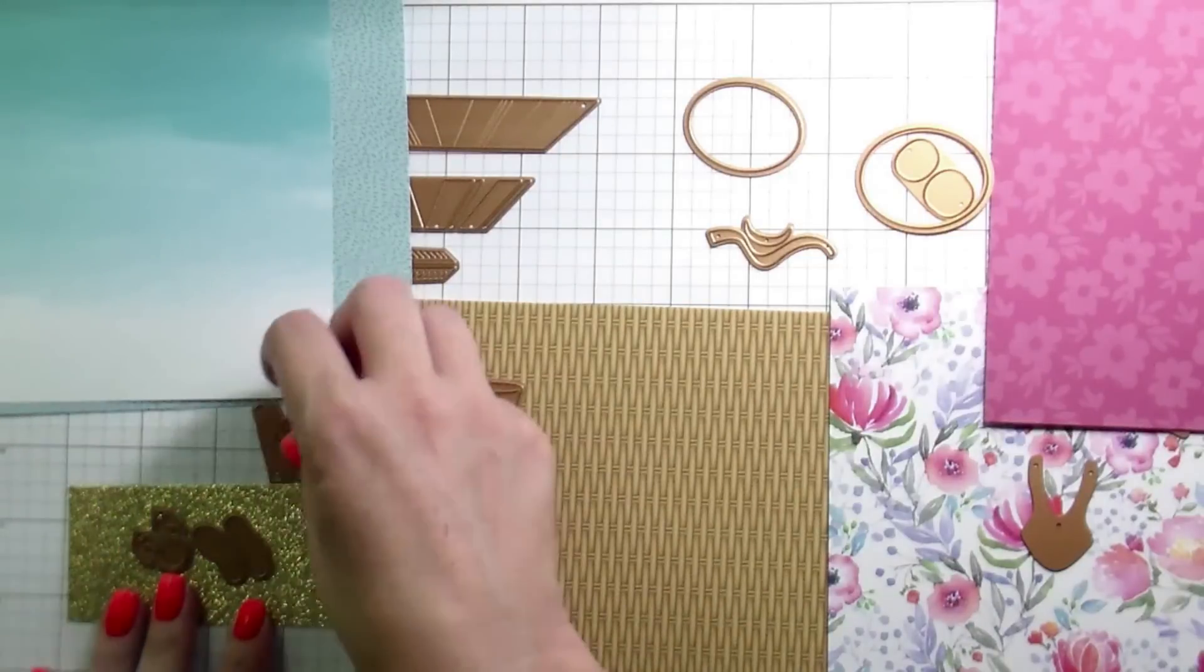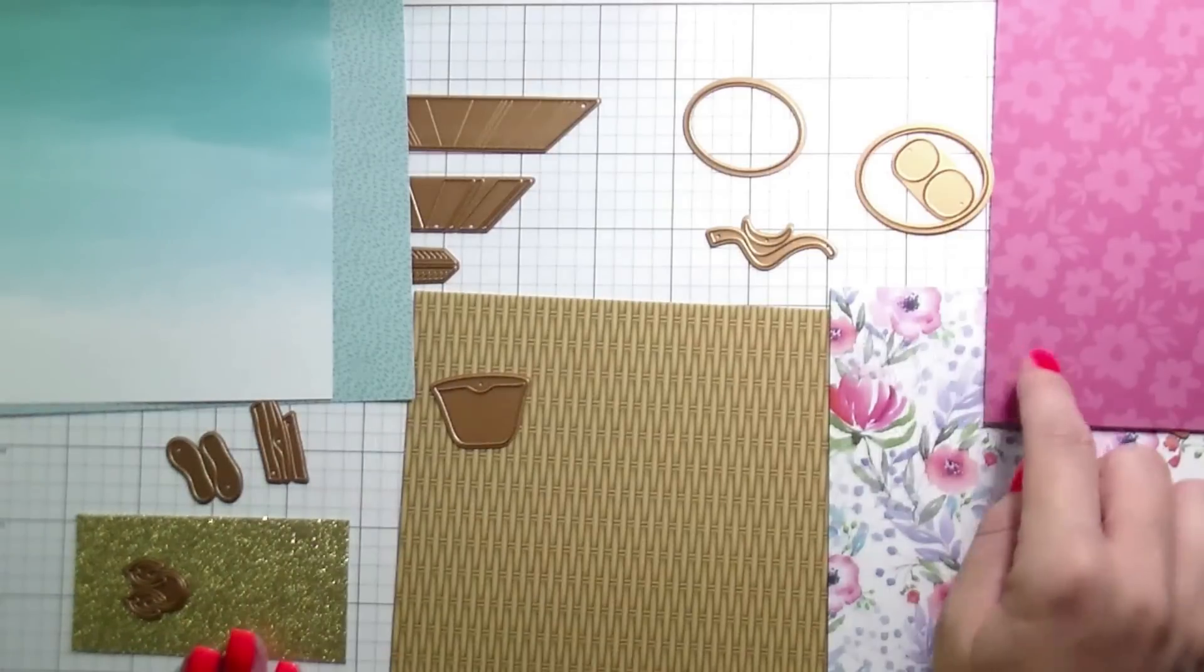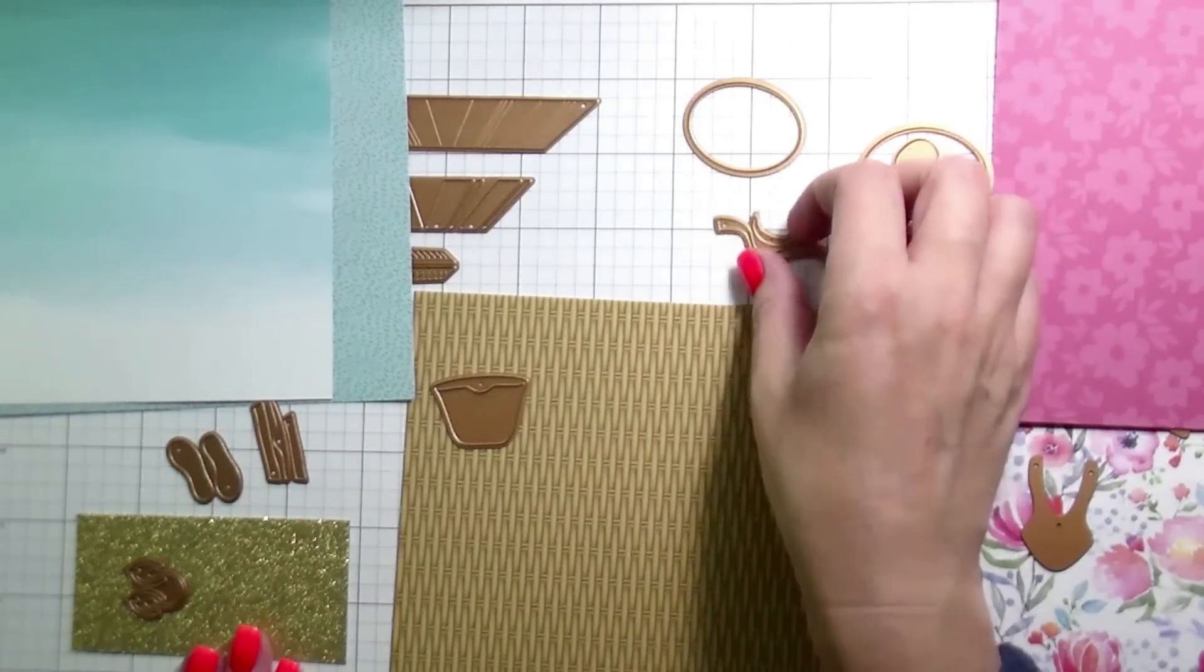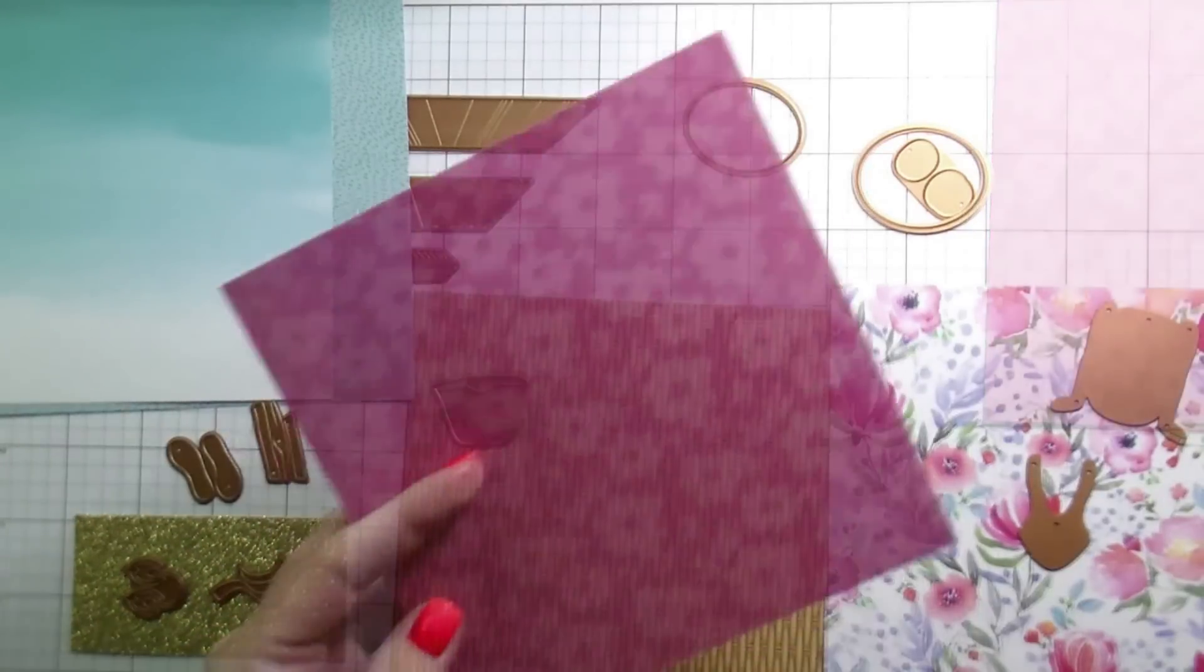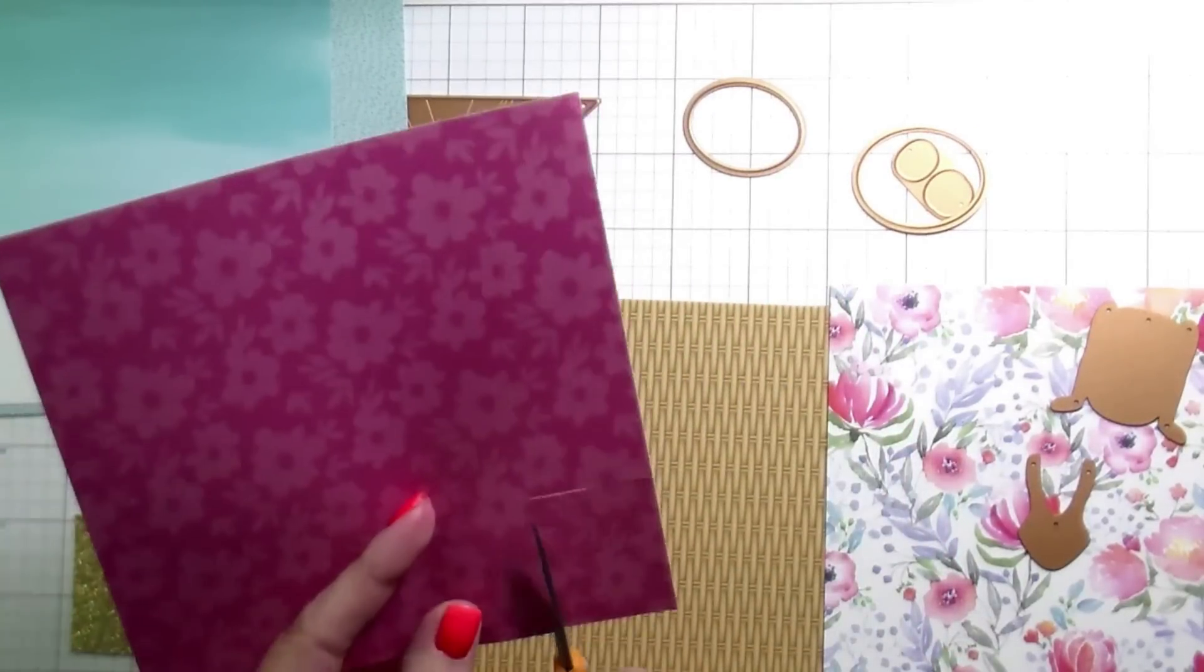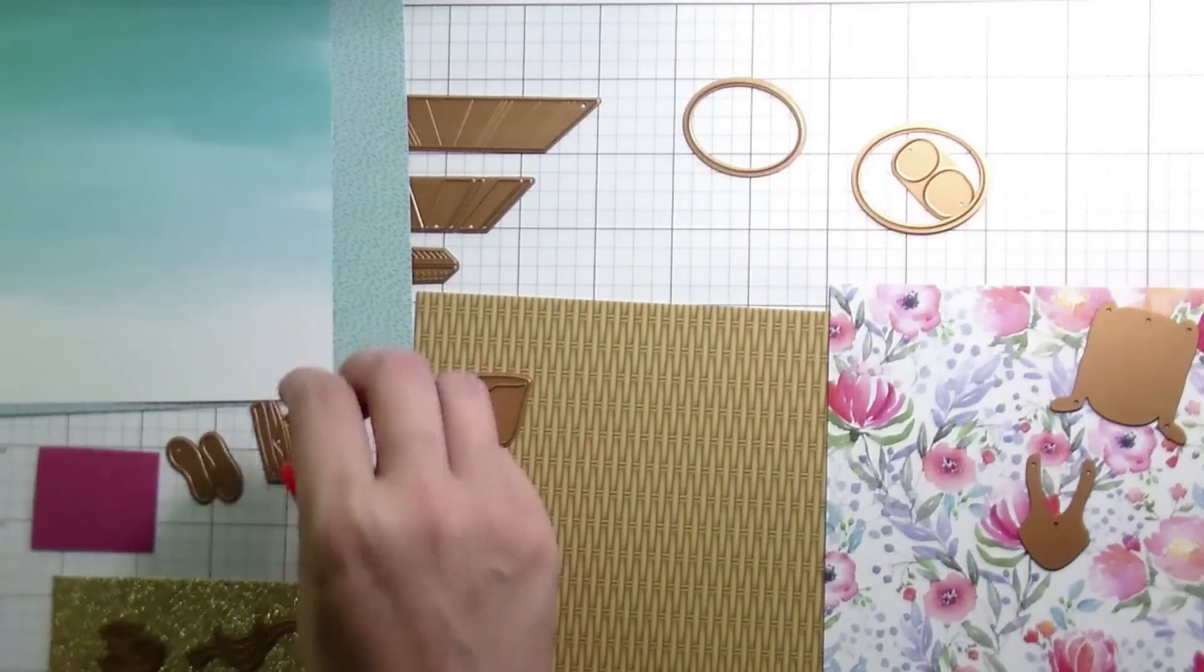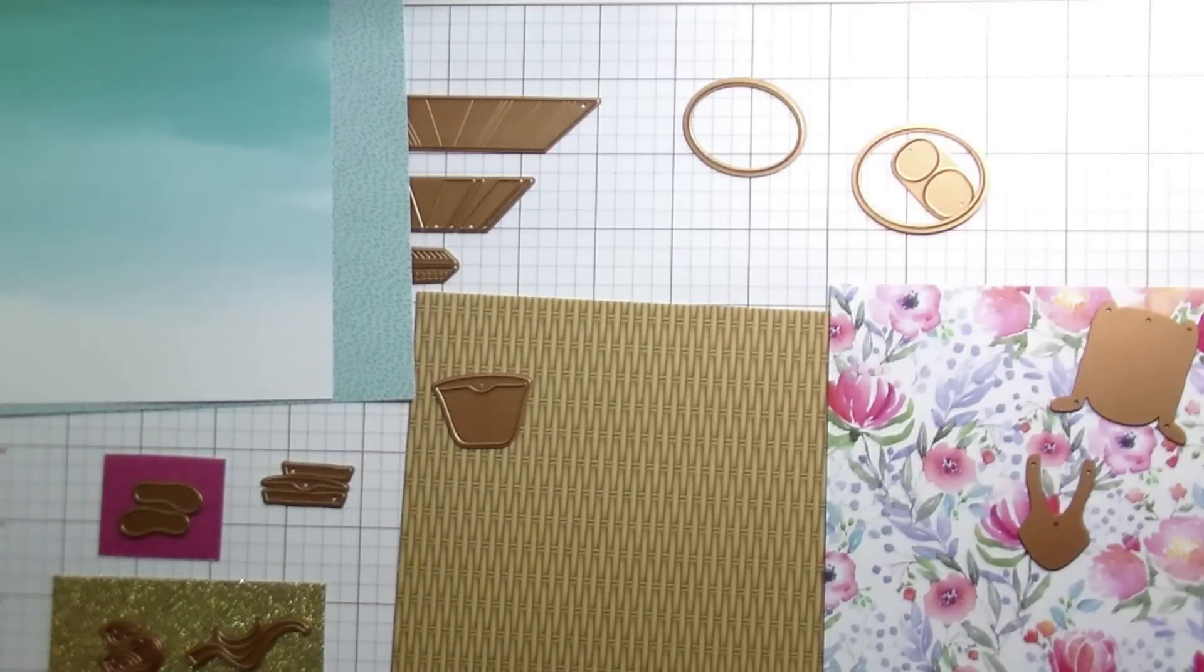The other thing that's really nice is using specialty papers. So for the flip-flops, the little thongs of the flip-flops, and then the handle of the bag, as well as the ribbons for the hat, I'm going to use this glitter paper. And I mean, it's just a super fun way to add some extra shine that's really easy. The one I'm using is Tonic, I think, and it die cuts beautifully.